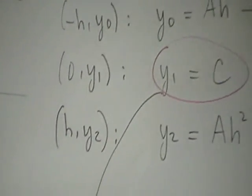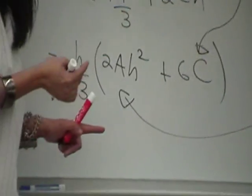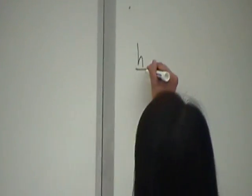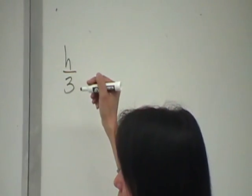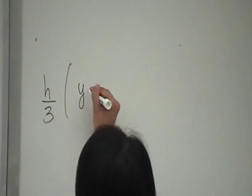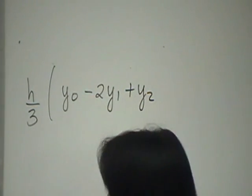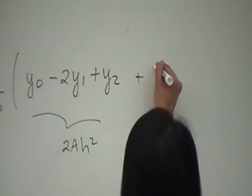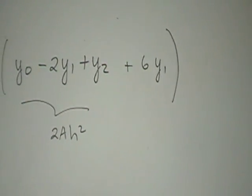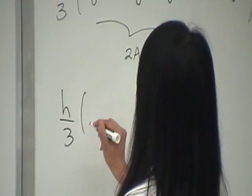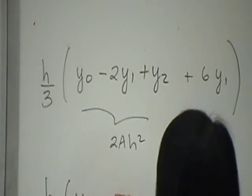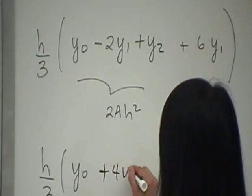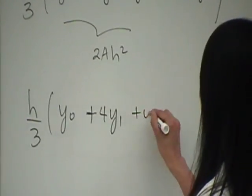Substituting, the area of the first parabolic sector equals h/3 times (y₀ − 2y₁ + y₂ + 6y₁), which simplifies to h/3 times (y₀ + 4y₁ + y₂). That's the area under the first parabolic arc covering the first two subintervals.